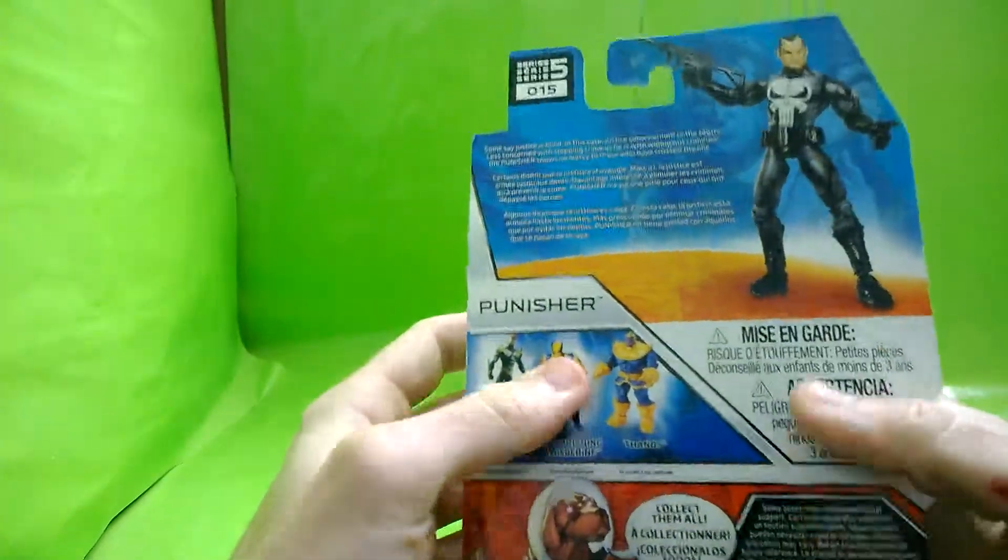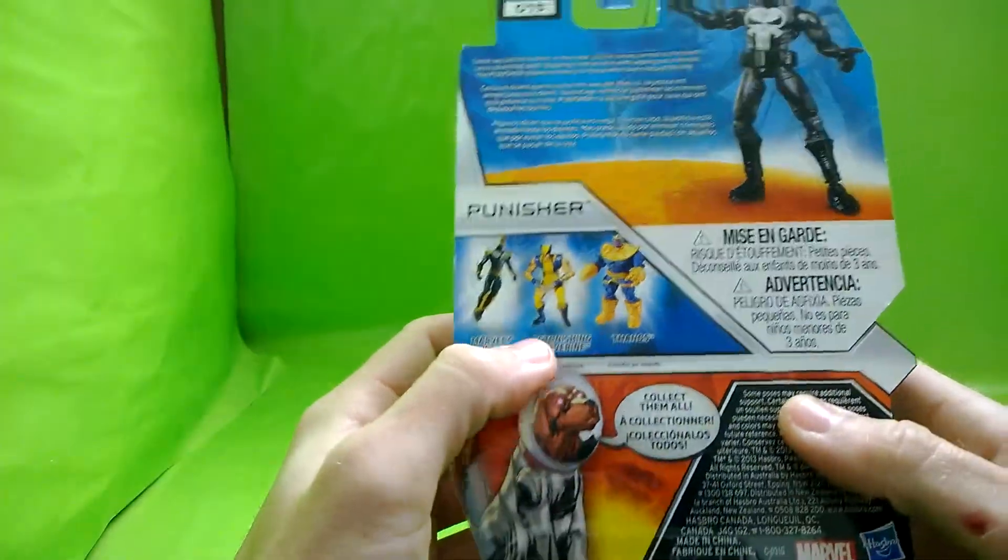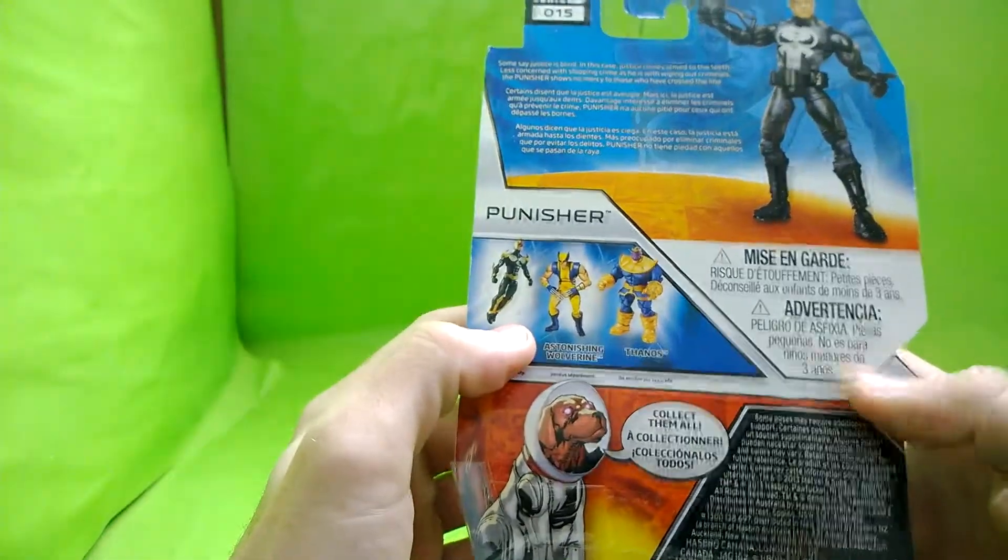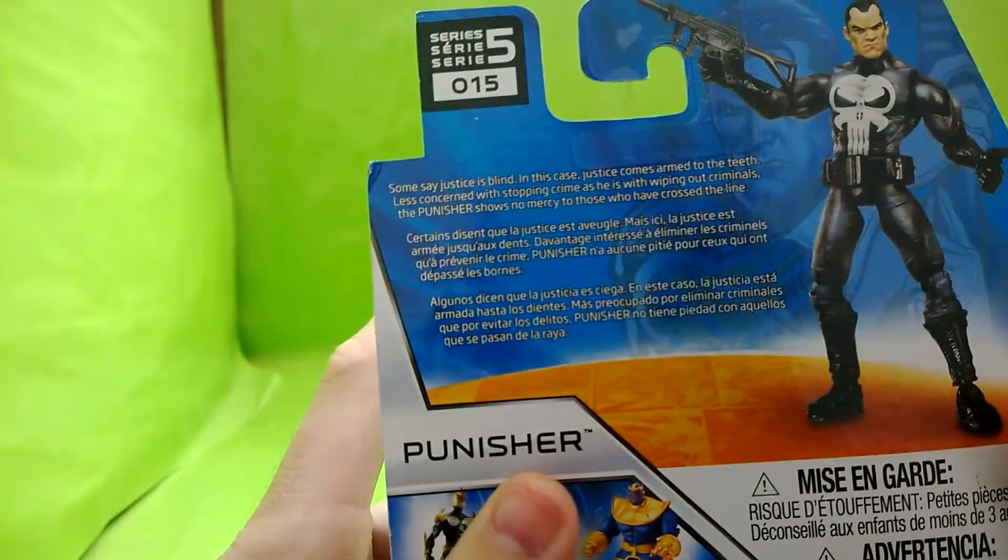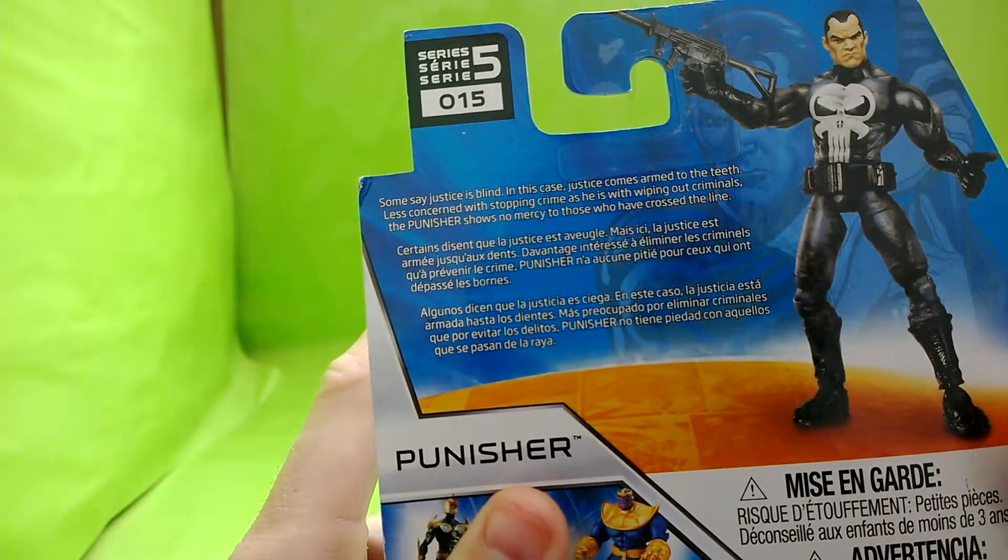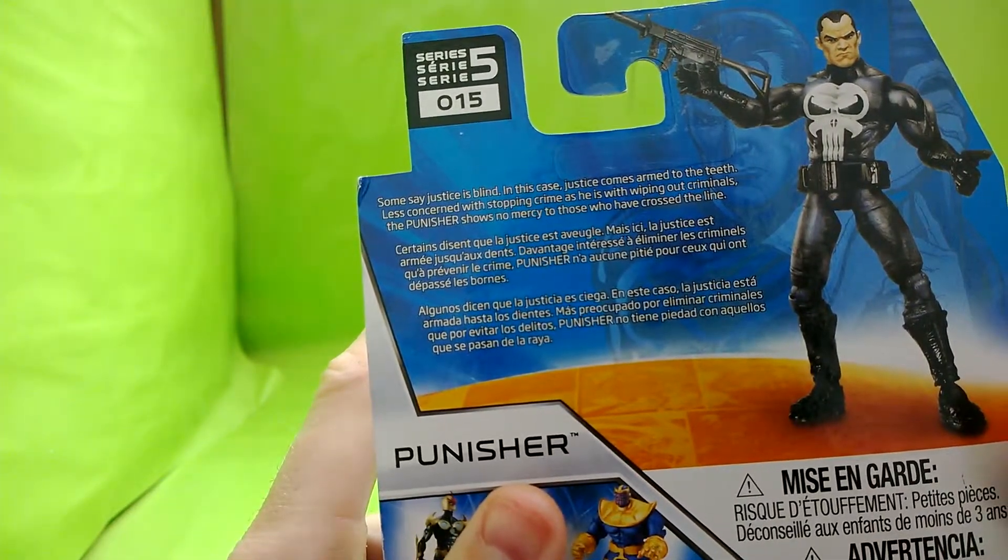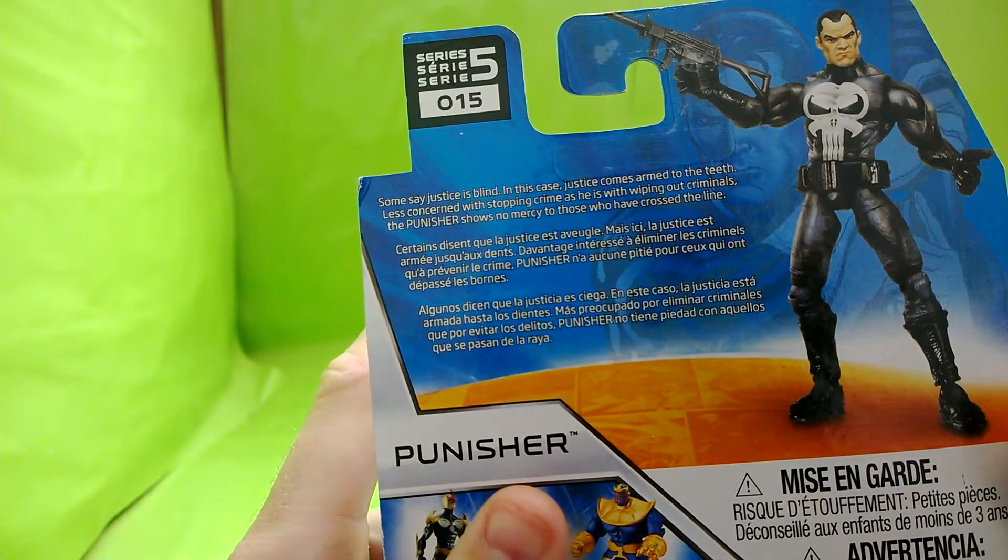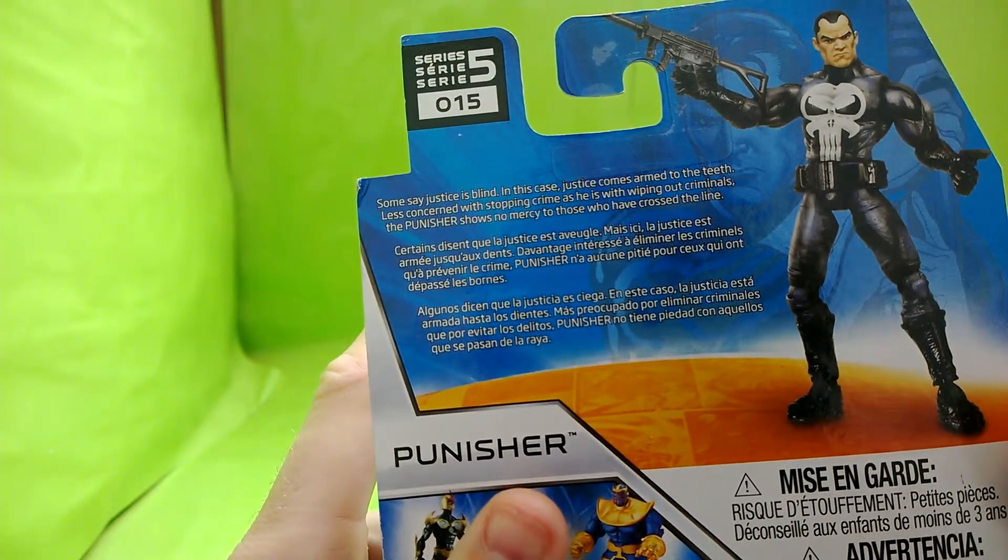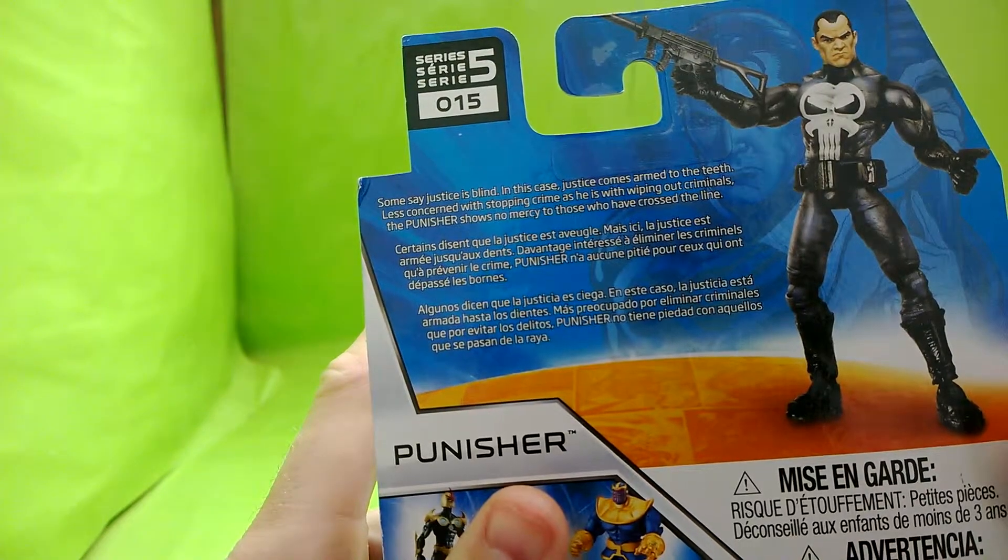Looking at the package, here's his character bio. I'll read it: Some say justice is blind. In this case justice comes armed to the teeth. Less concerned with stopping crime as he is with wiping out criminals, the Punisher shows no mercy to those who have crossed the line.